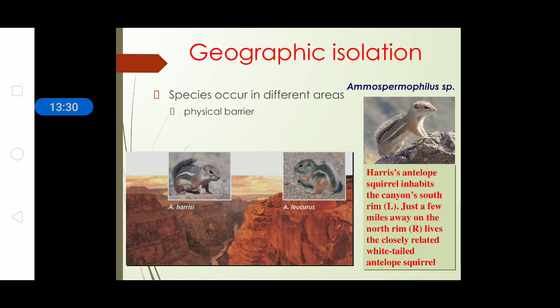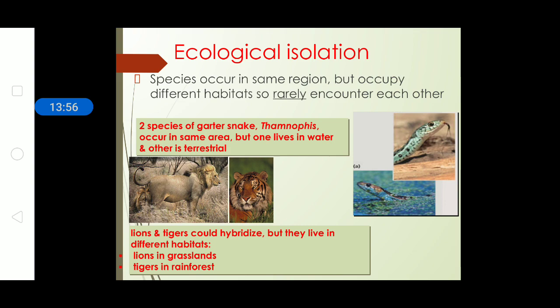In the examples shown: for geographical isolation, the Harris's antelope squirrel is found only in the south rim while the white-tailed antelope squirrel (Ammospermophilus leucurus) is found on the north rim — because of the cliff present between these two mountains, the two species are never able to mate.